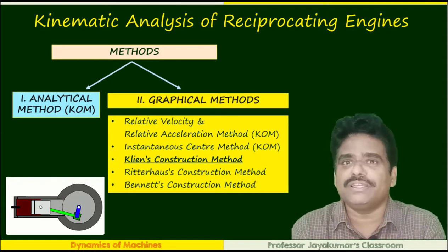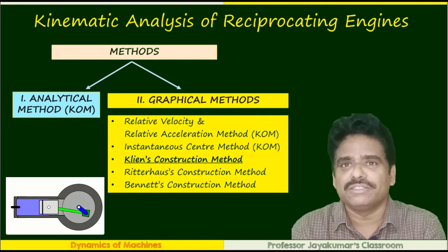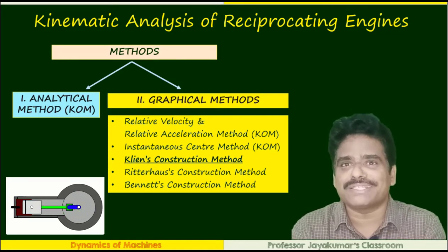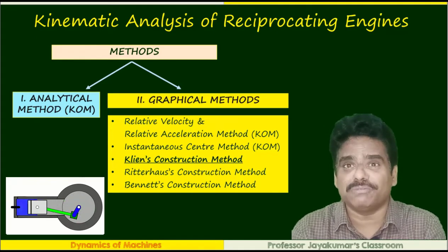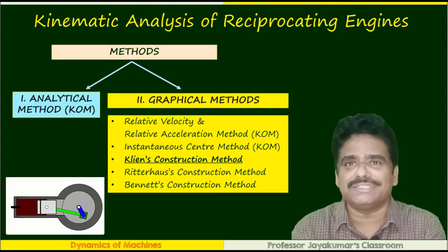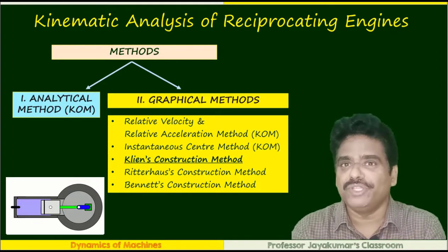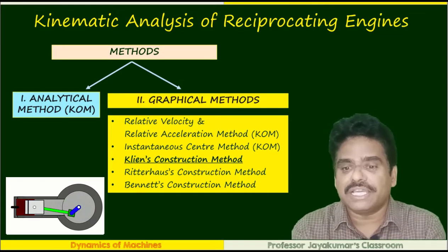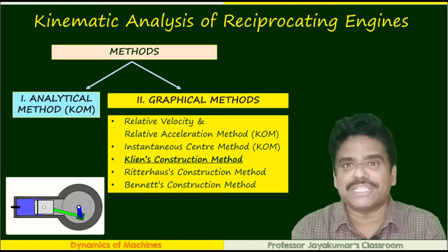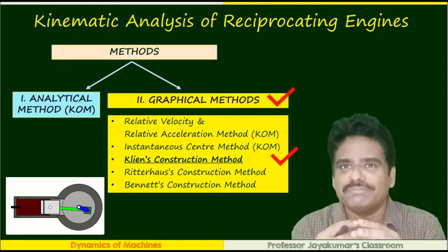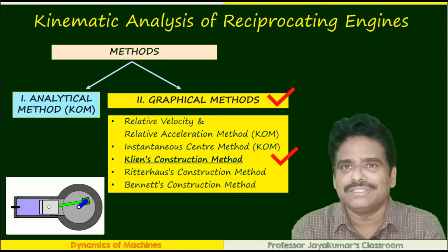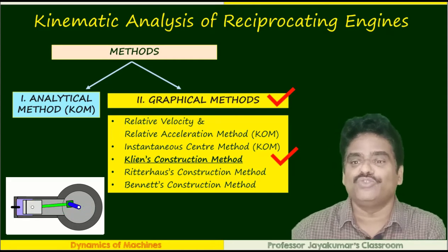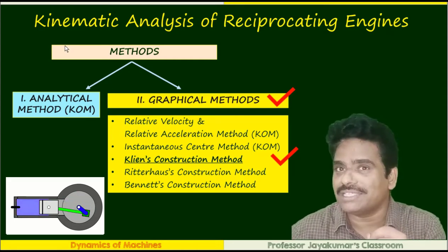There are so many graphical methods available in the literature. We have already studied in our KOM subject: relative velocity method, relative acceleration method, and instantaneous center method. In addition to them, we have some other graphical methods, namely Klein's construction method, Ritter-Ross construction method, and Bennett's construction method. Of them, Klein's construction method is considered to be the easiest and most popular graphical method to find velocity and acceleration of an IC engine.